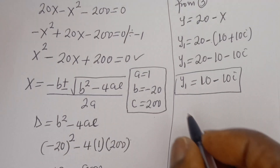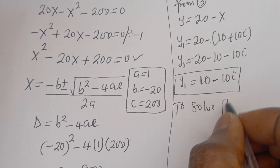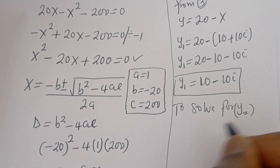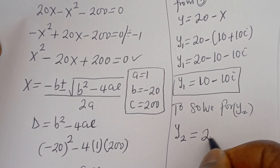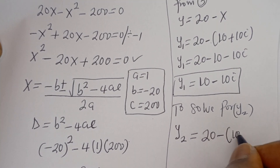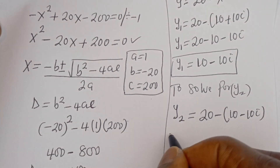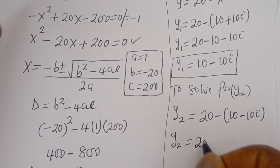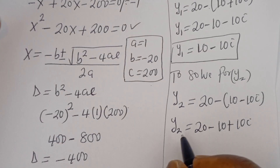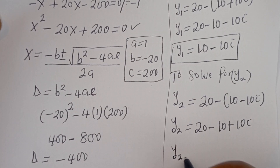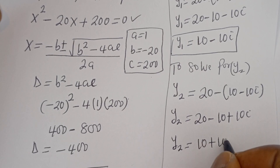Now let's solve for Y2. Y2 is equal to 20 minus X2, which is 20 minus (10 minus 10i). Then Y2 is equal to 20 minus 10 plus 10i. So Y2 is equal to 10 plus 10i. This is the value of Y2.